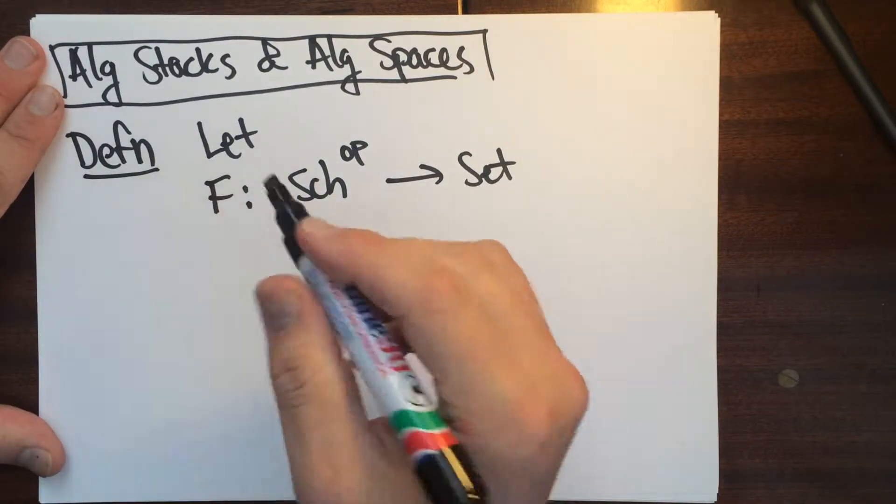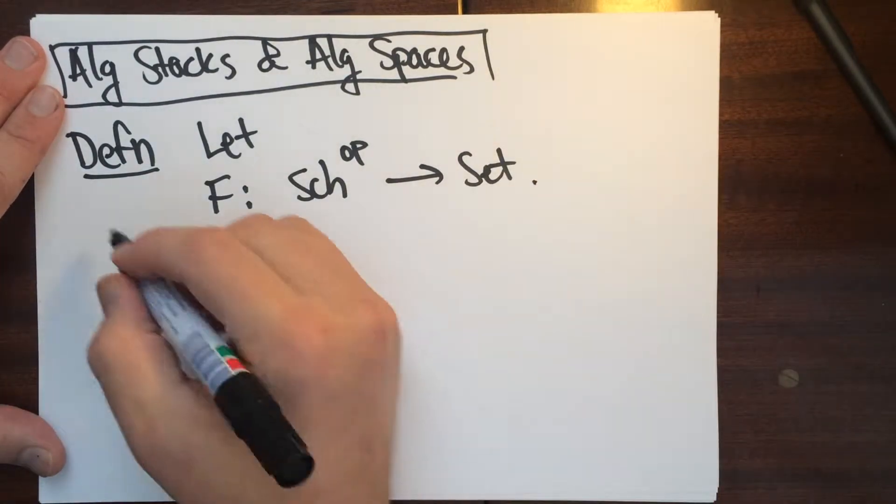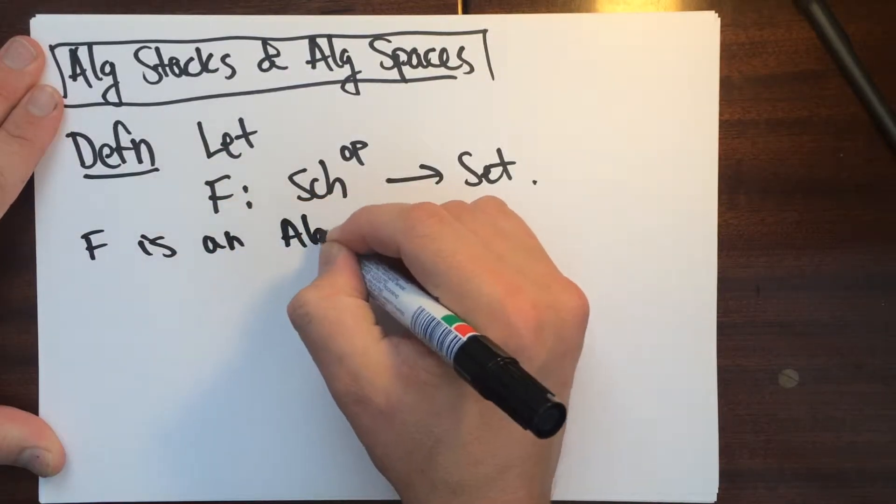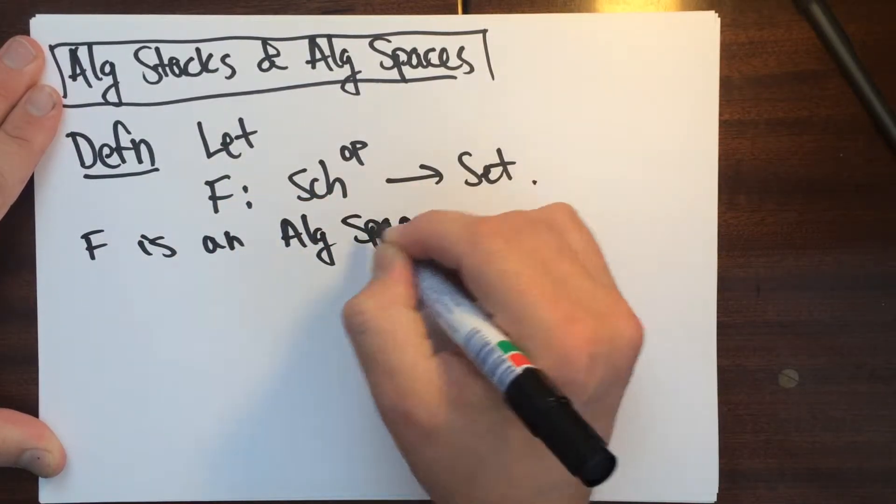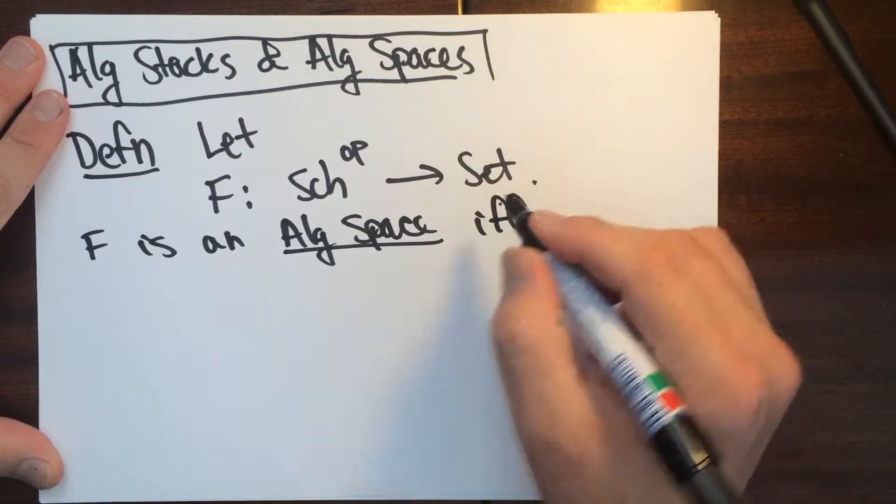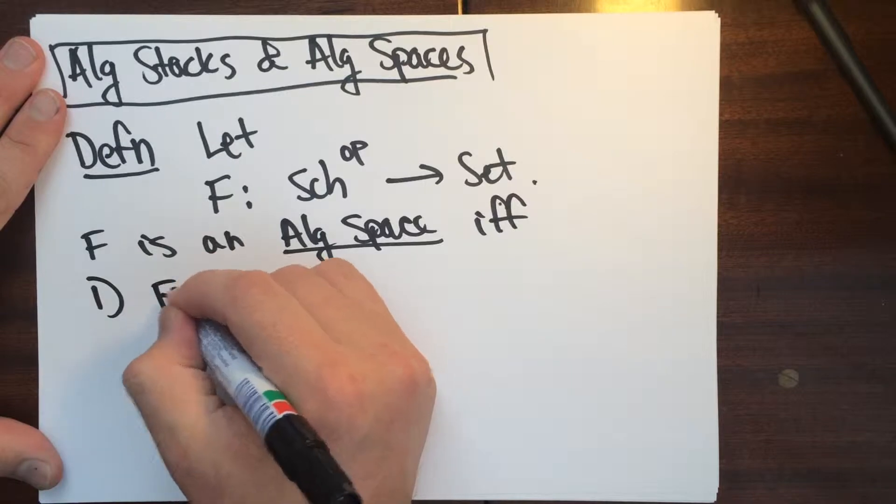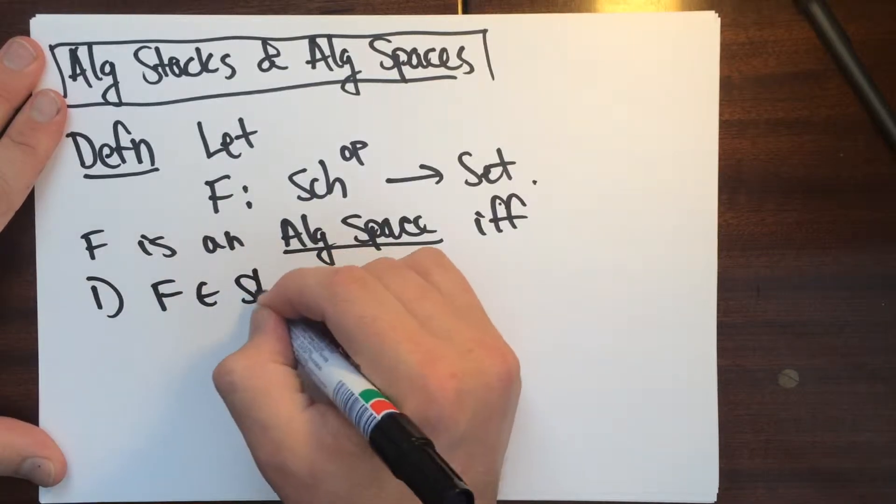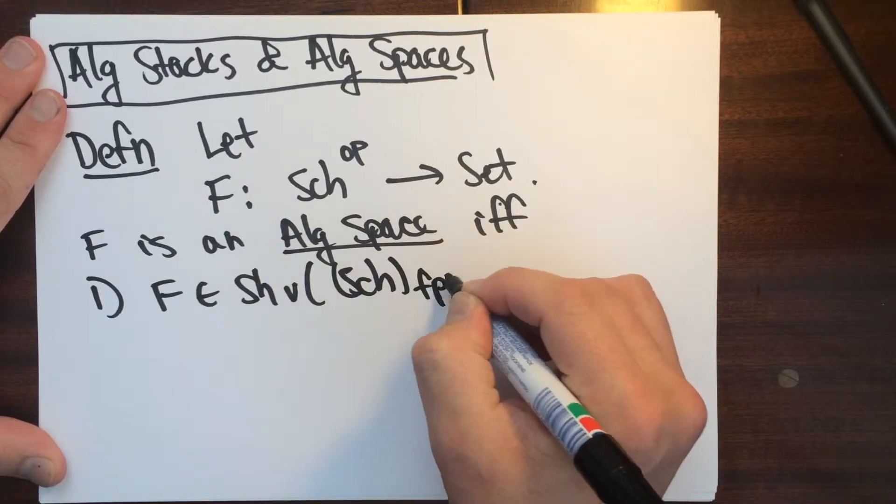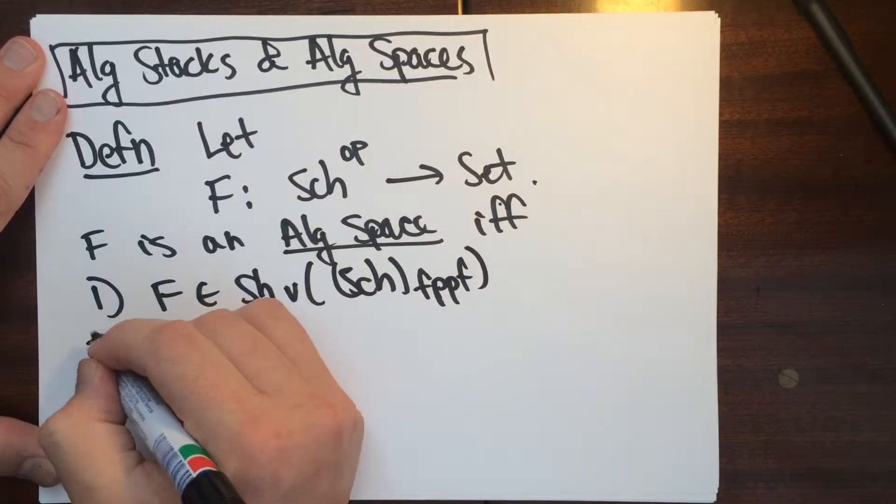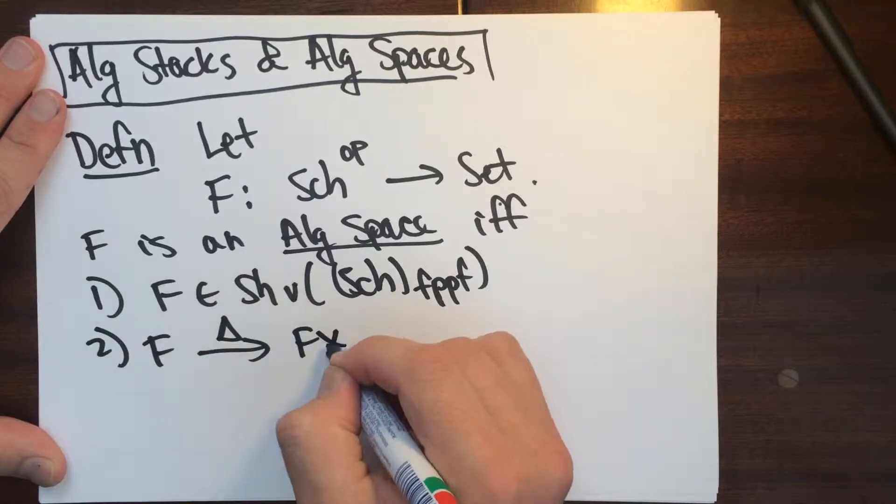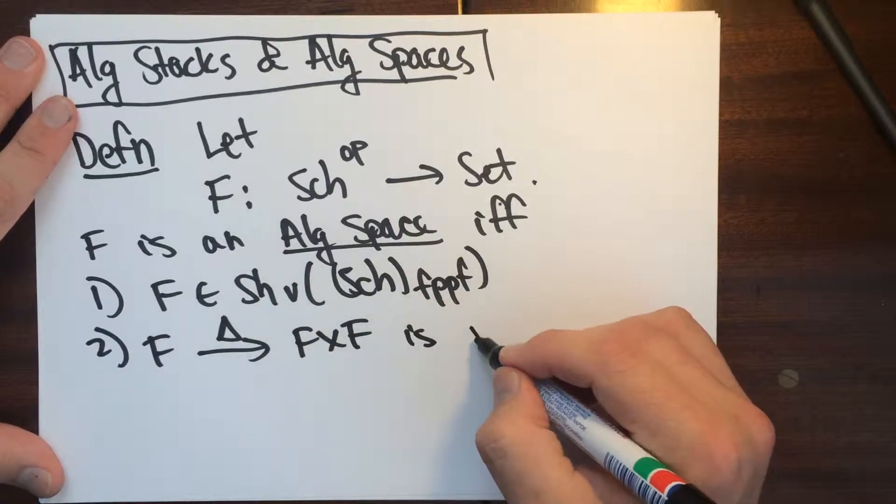So F is an algebraic space if and only if the following three things are satisfied. F is a sheaf in the fppf topology. The second thing is that this diagonal map is representable.